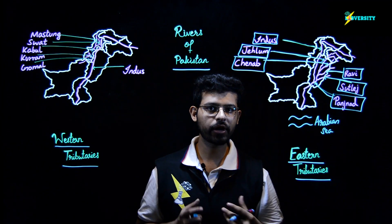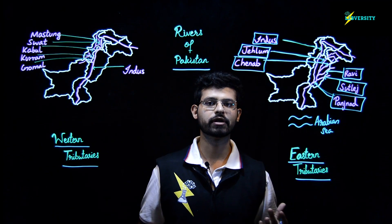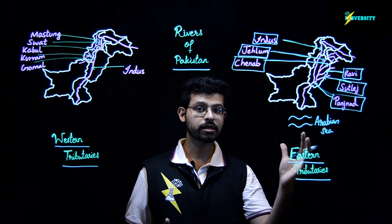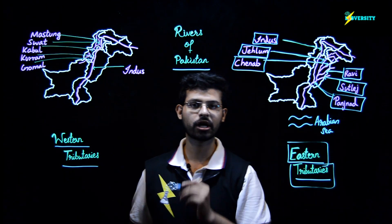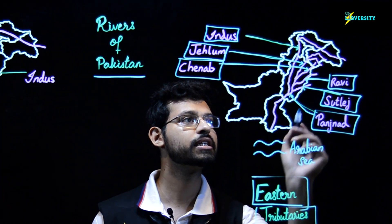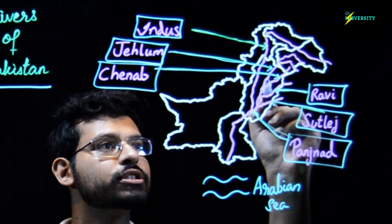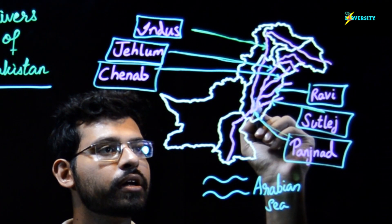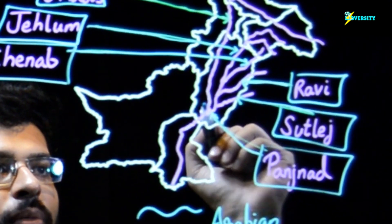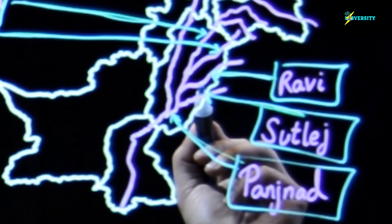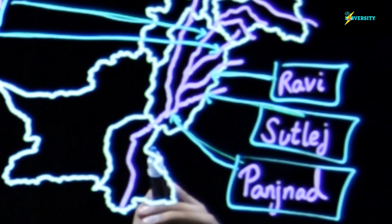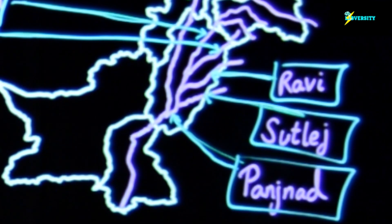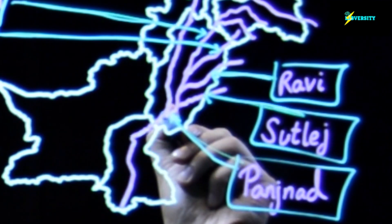During its course, River Indus meets different rivers from the east — that is why we call them the eastern tributaries. We can see that Jhelum and Chenab combine first and ultimately go on to meet River Indus. Then River Ravi and Sutlej also combine and ultimately all of these rivers join River Indus.